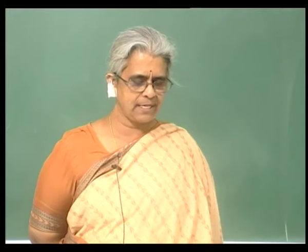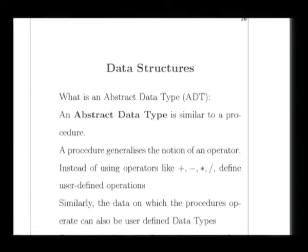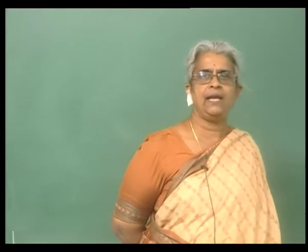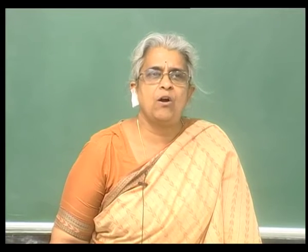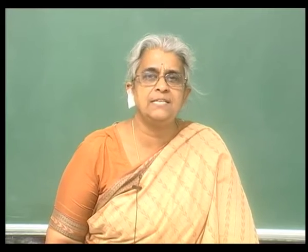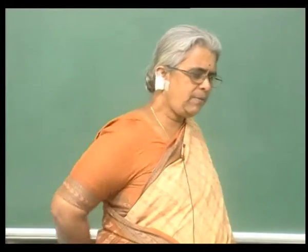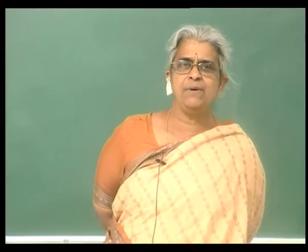Let me explain what an abstract data type is. It is very similar to a procedure. We have already seen functions and procedures in your programming module, and in the last class we found the sum of a set of elements, searched for an element in an array, and sorted a given set of elements. So when we say sorting an array, sorting is an operation being performed on the array. Similarly, searching is an operation being performed on an array. An abstract data type is kind of similar to a procedure.